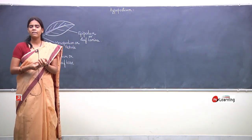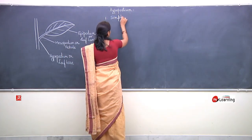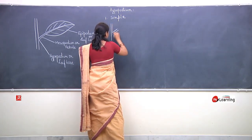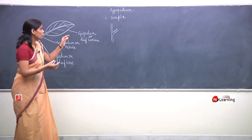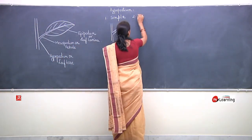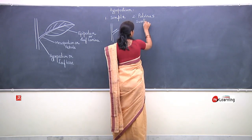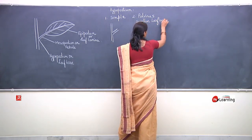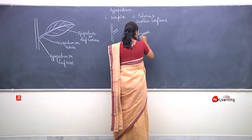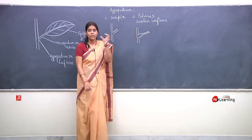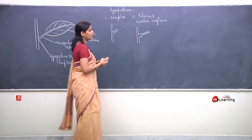Leaf ka basal portion jahaan se leaf stem se attach hoti hai — that is the leaf base. It can be simple: koi bhi outgrowth ya swollen part observe nahi kiya jata, to use simple leaf base kaha jata hai. Second type is pulvinus — pulvinus means swollen leaf base. Is tarha se leaf base agar fulka mota ho jata hai, to use pulvinus ya swollen leaf base kaha jata hai. Bahut sare plants mein is tarha ka leaf base observe kiya jata hai.